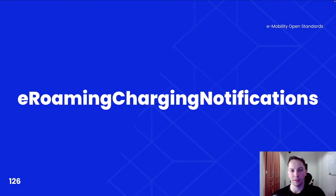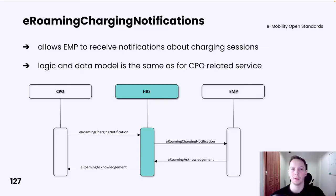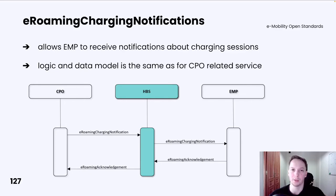eRoaming charging notification service. This service does not differ between CPO and EMP almost at all. As a reminder, charging notifications allow the EMP to know more details about an ongoing charging session, which is crucial for their customers. The logic, data model, and types of notifications are the same as for the CPO-related service. The only difference is that the EMP must be able to handle the eRoaming charging notifications request and return an eRoaming acknowledgement as a response.